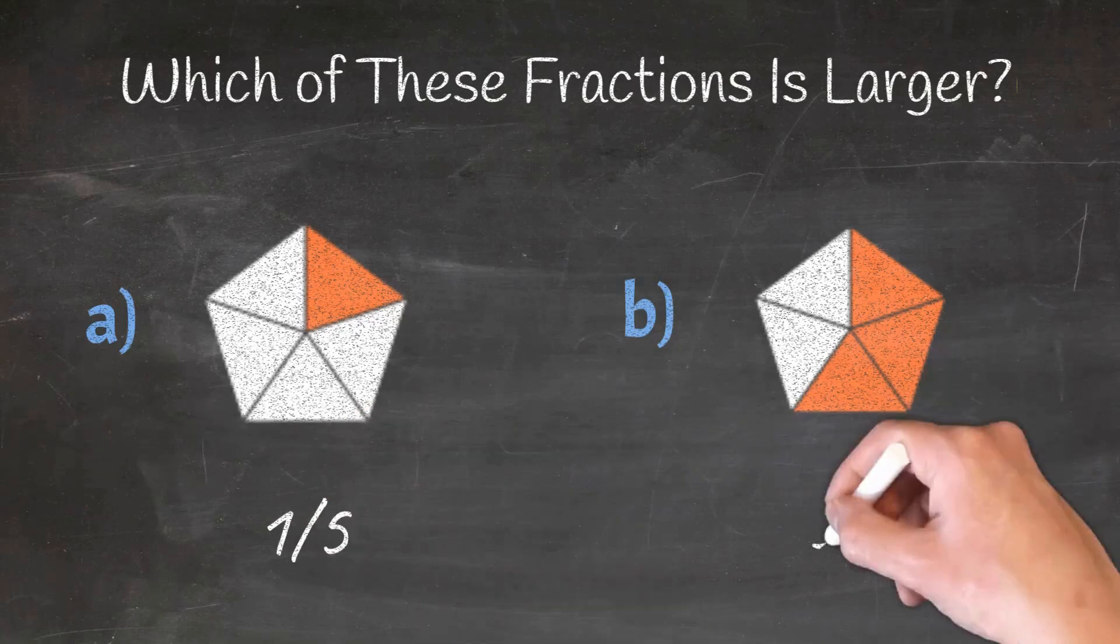Fraction A is one-fifth and fraction B is three-fifths, so fraction B is larger than A.